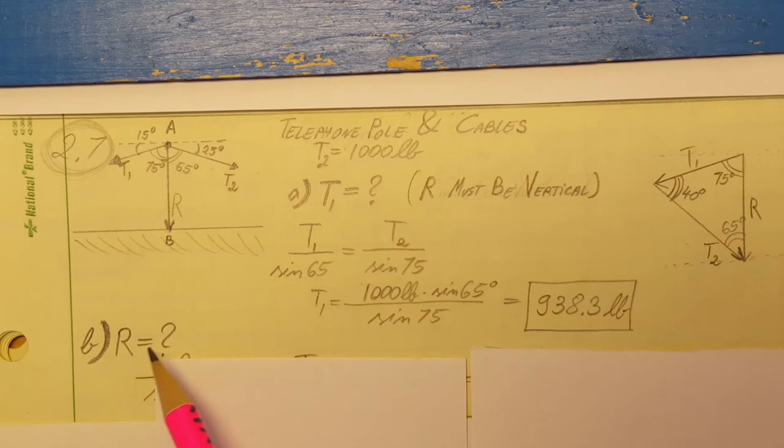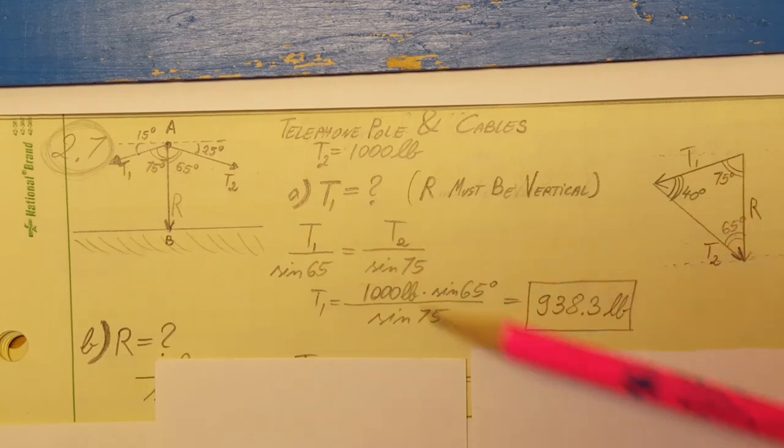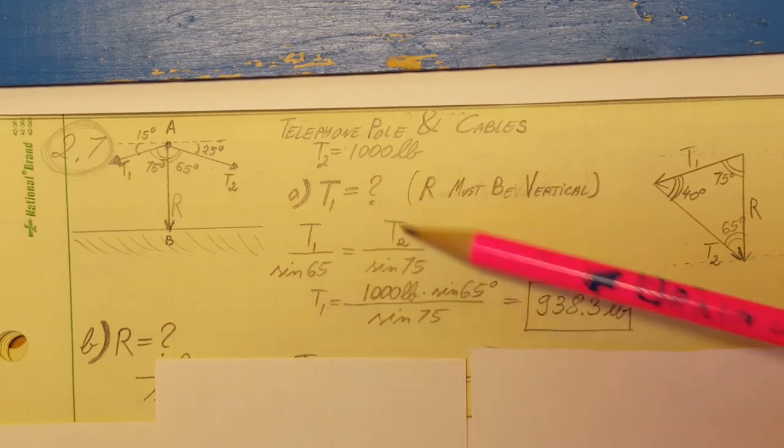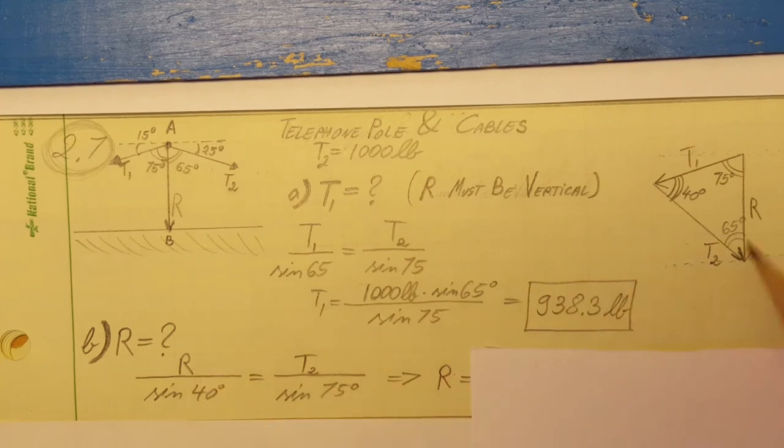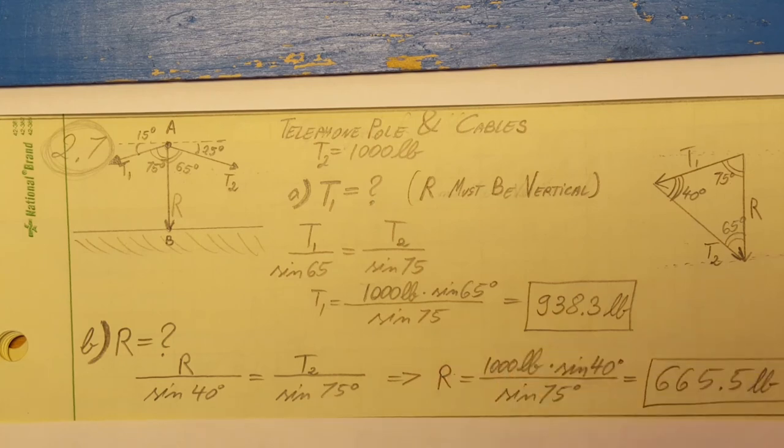In the second part they want us to find R, the magnitude of R. For this I'm going to use the law of sines just like I did before, but this time R over sine of 40 equals T2 over sine of 75. We're going to solve for R, and with a calculator we get 665.5 pounds.